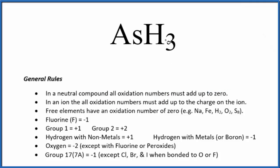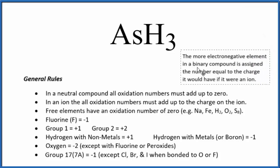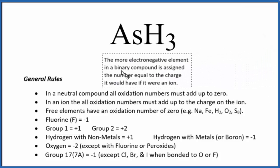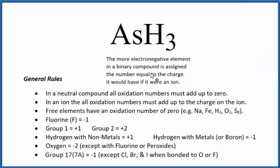Next, hydrogen when it's bonded to nonmetals is plus one. Arsenic is a metalloid, so we're kind of stuck there, but it is a little bit more electronegative than hydrogen. So we're going to use this special rule: the more electronegative element in a binary compound gets the charge it would have as an ion.